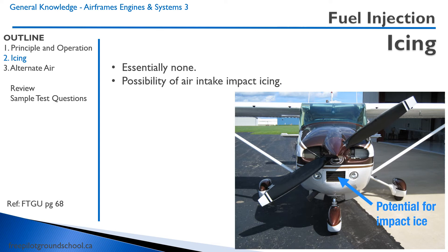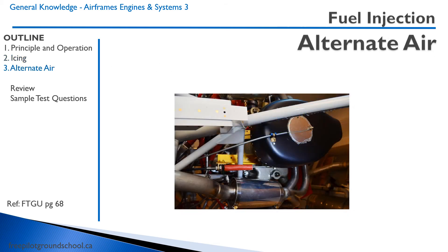One of the major advantages of the fuel injection system compared to the carburetor is that it's highly unlikely that you will get any sort of icing. The reason for that is because there is no venturi that reduces the temperature of the fuel air mixture in the engine. However, there is still a potential for impact icing. If you were to get icing onto the air filter, you could end up starving the engine of air. This is highly unlikely, though. If this happens, some aircraft have alternate air intakes. This is one right here — you can see a cable that goes to the pilot's control right here, and this would open right up and allow alternate air from inside the engine in case the air filter was blocked.